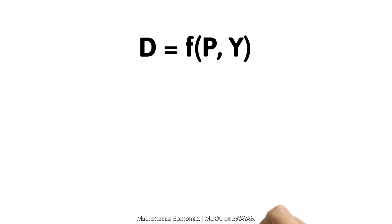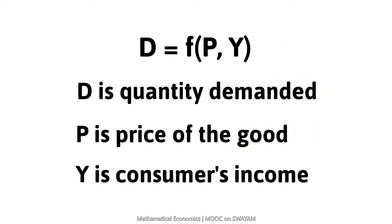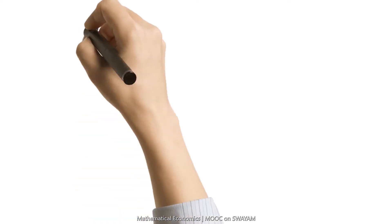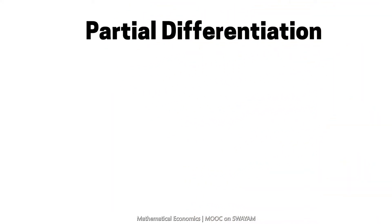Suppose demand is a function of price and income. In order to find the effect of price on the quantity demanded, we have to keep income constant. And in order to find the effect of income on the quantity demanded, we have to keep the price constant. These effects are studied by using the concept of partial differentiation.